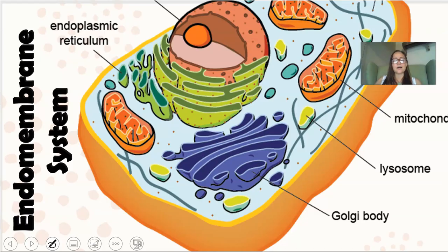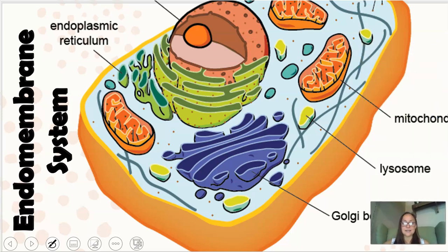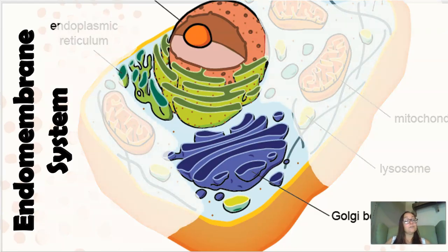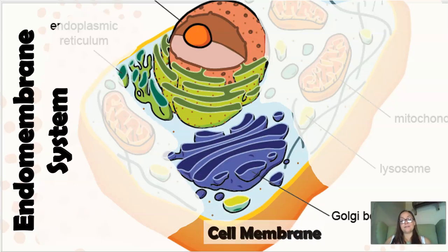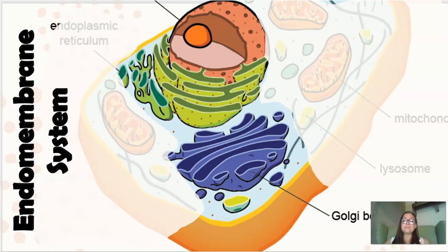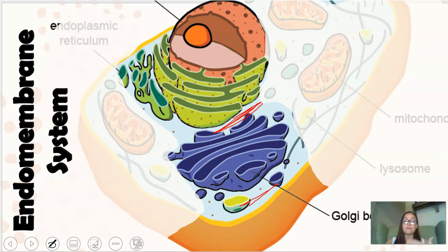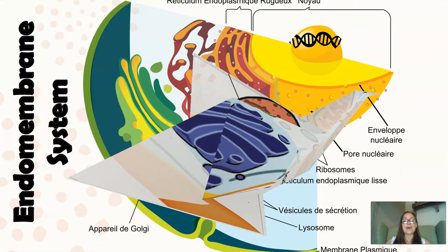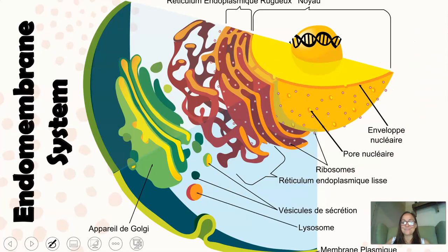These organelles all work together in what's called the endomembrane system. The endomembrane system involves the nucleus, the rough ER, the Golgi, and the cell membrane. Transport vesicles carry proteins between organelles — they bridge the gaps between each step of the system.